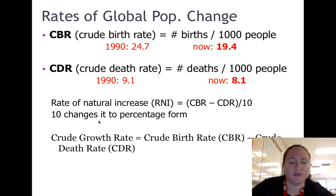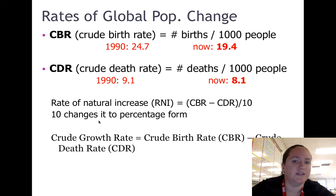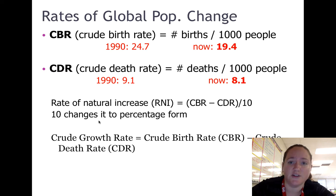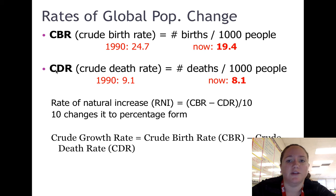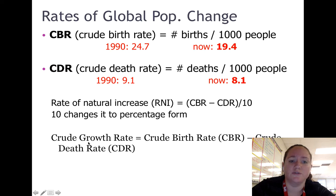These are some basic formulas and terms you need to know. Crude birth rate is the number of births per 1,000 people — in 1990 it was about 24.7, now it's about 19.4. You don't need to memorize those numbers, just be aware it has decreased over time. If you see CBR, know that stands for crude birth rate. Crude death rate is the number of deaths per 1,000 people — in 1990 it was about 9.1, now it's about 8.1. Taking the difference of these two gives you the crude growth rate.